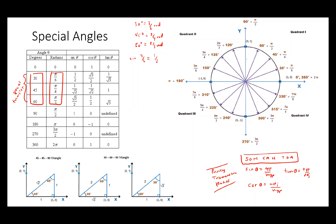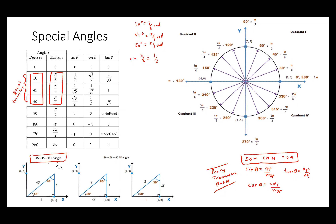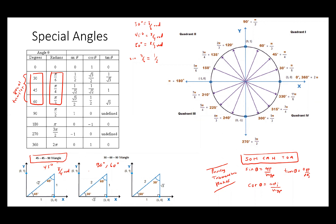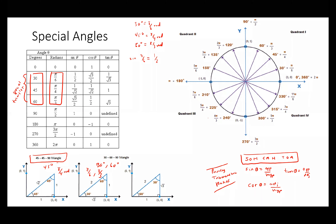You can use special triangles to memorize these values. The 45-45-90 triangle is useful for sine 45, and there's another triangle for 30 and 60 degrees. So 45 degrees is π/4 radians, 30 degrees is π/6 radians, and 60 degrees is π/3 radians. When you do enough questions, you'll just get these memorized anyway.